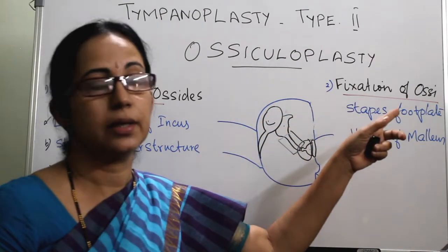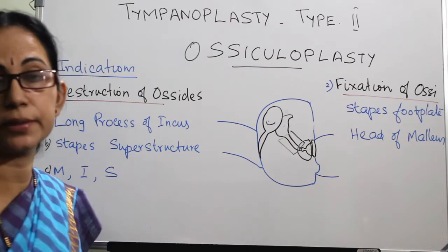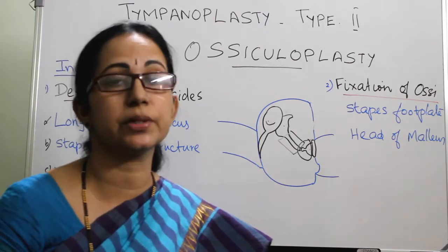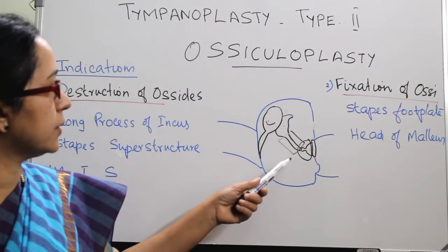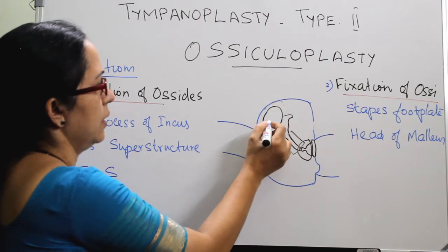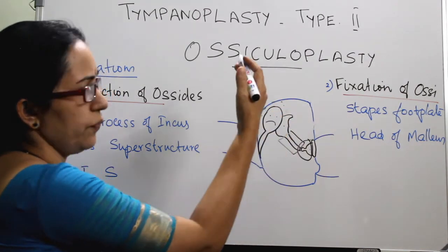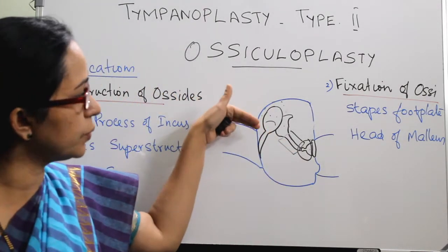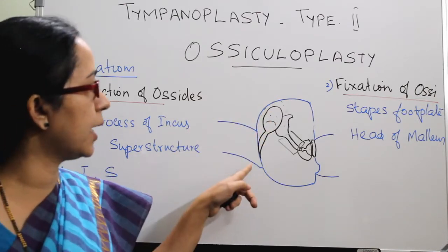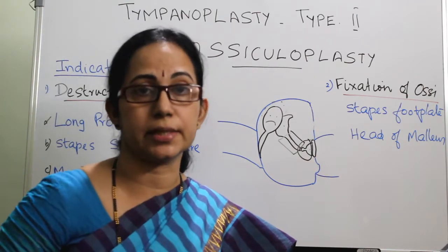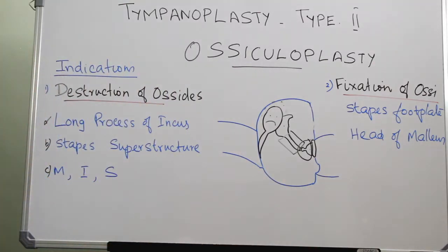Fixation of the ossicle can be either fixation of the stapes footplate — ankylosis of the footplate of stapes due to otosclerosis or due to tympanosclerosis — or fixation of the head of malleus, which is the commonest one. The head of malleus is fixed either because of congenital fixity or due to tympanosclerosis. In that condition we have to remove the head of malleus and also the incus, and the handle of malleus is attached to the stapes superstructure. These are the indications: destruction of ossicle and fixation of ossicle.